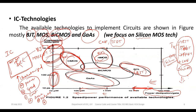BiCMOS technology was later developed and is effective compared to individual transistor realizations, as it manages both power consumption and propagation delay. It is a combination of CMOS technology and bipolar junction transistor technology. These are the technologies we will consider in our course.